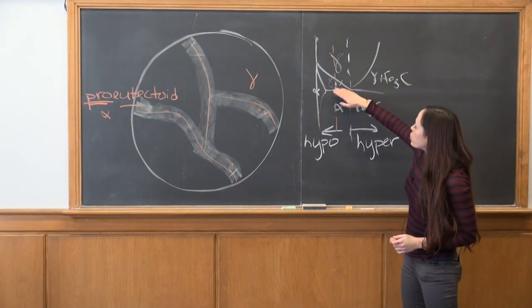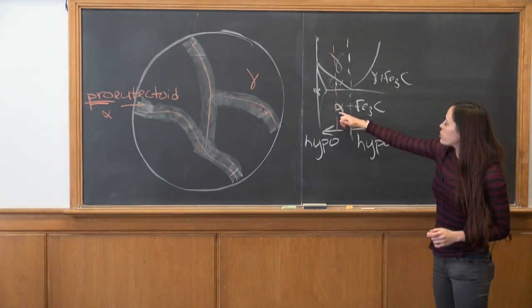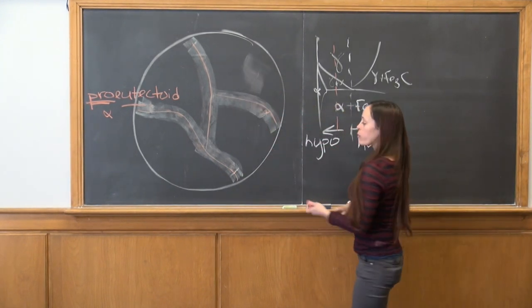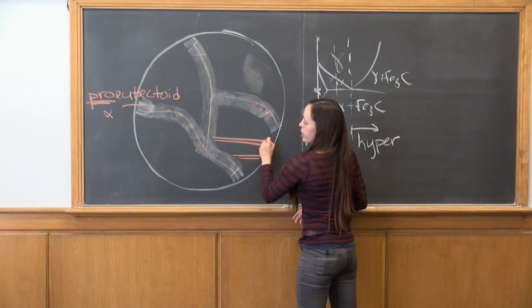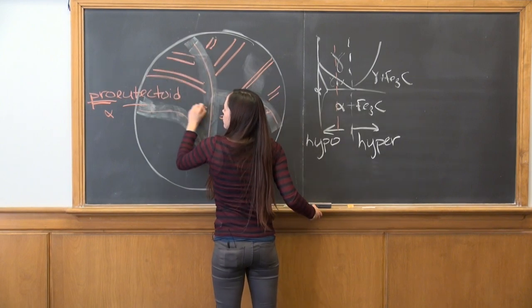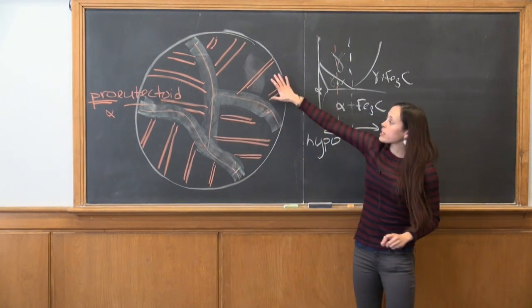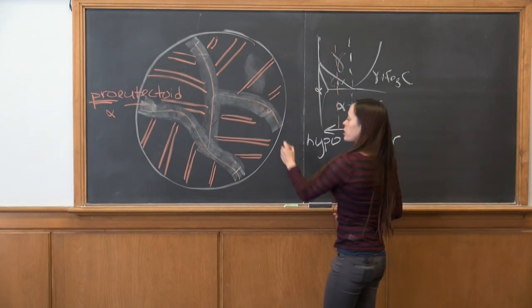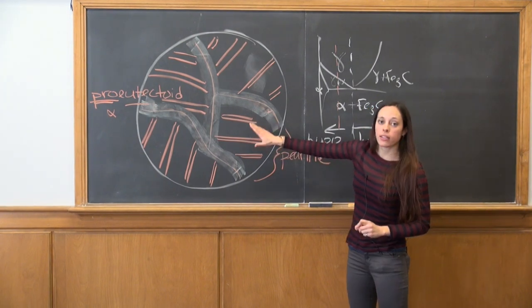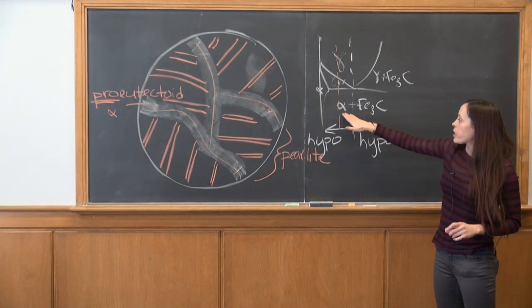Now as we cool below the eutectoid temperature, all of the remaining austenite will transform into ferrite and cementite. So this is gone, and what we're left with is this alternating layer structure. So now this layered structure overall is called pearlite. We label that as pearlite, and then inside the pearlite we have alternating phases of ferrite and cementite.